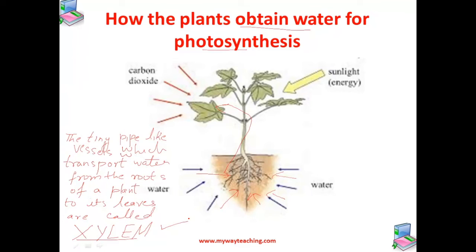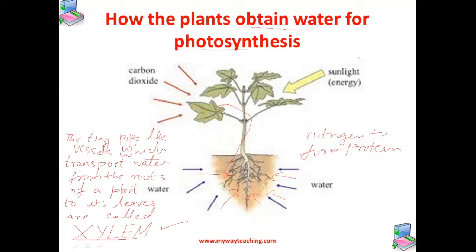During photosynthesis, plants also need other minerals from the soil to produce foods other than carbohydrates. For example, plants need nitrogen to form proteins. This nitrogen from the soil gets dissolved in water and is absorbed by the roots while absorbing water.